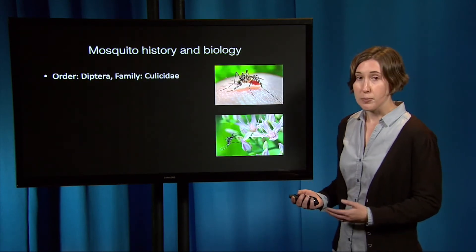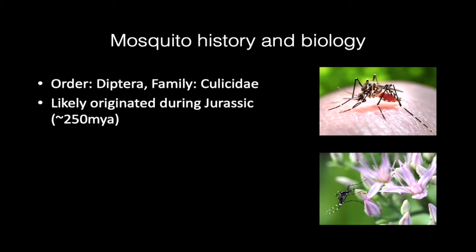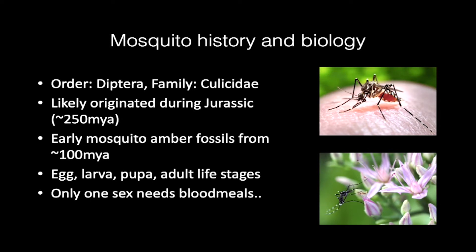Mosquitoes are in the order Diptera with other flies, in the family Culicidae. They likely originated during the Jurassic — and kind of like the Jurassic Park movie, there are early mosquito fossils preserved in amber. During their lifetime, mosquitoes go from egg to larvae to pupae to adult. As an adult, only one of the sexes needs blood meals, and if you guessed females, you're correct. Females generally need blood in order to develop their eggs. Males just reproduce, generally don't live as long, are smaller, and sometimes they pollinate flowers.